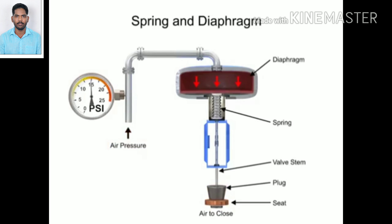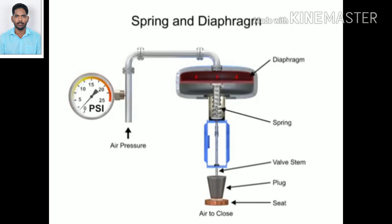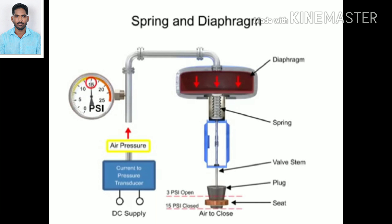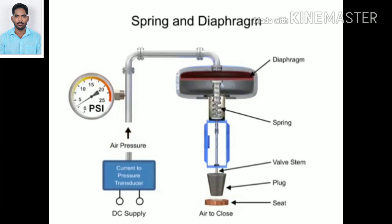With no air pressure, the restrictor is pushed upward by the spring to act as a normally open control valve. To vary the position of the restrictor and flow through the valve, a current to pressure transducer can be used to provide a 3 to 15 PSI signal to the diaphragm. At 3 PSI, the valve is maintained open, and at 15 PSI, the valve is maintained closed. Pressures between the 3 to 15 PSI range proportionally change the flow of the valve.